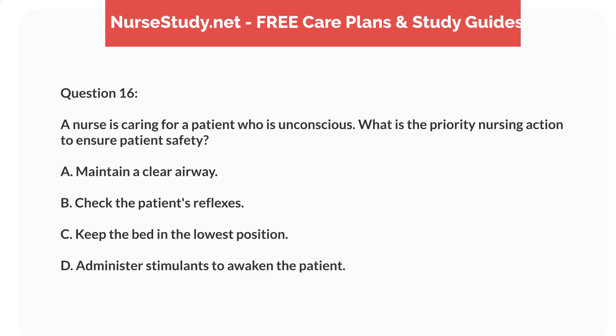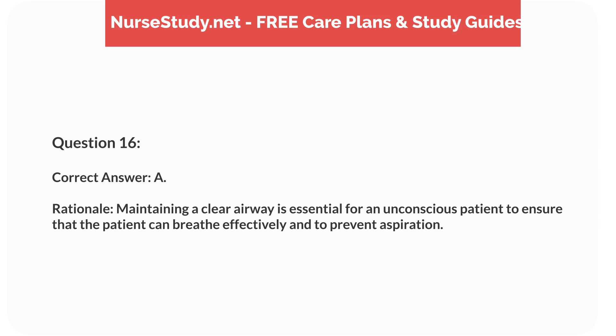Question 16. A nurse is caring for a patient who is unconscious. What is the priority nursing action to ensure patient safety? A. Maintain a clear airway. B. Check the patient's reflexes. C. Keep the bed in the lowest position. D. Administer stimulants to awaken the patient. Correct answer: A. Rationale: maintaining a clear airway is essential for an unconscious patient to ensure that the patient can breathe effectively and to prevent aspiration.